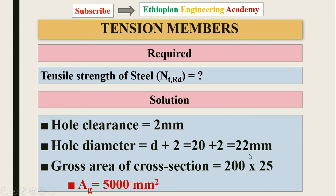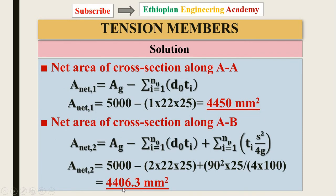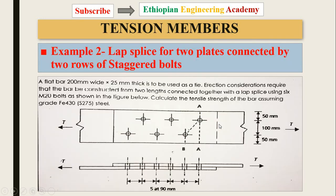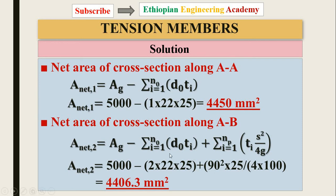The gross area equals width times thickness = 5000 mm². The net area along line A (straight cut through one row) equals 5000 − 2 × 22 × 25 = 3900 mm². The net area along the staggered line A-B uses the formula: gross area minus number of holes times hole diameter times thickness, plus the staggered correction term s²/4g. With one zigzag segment this gives the net area along A-B.